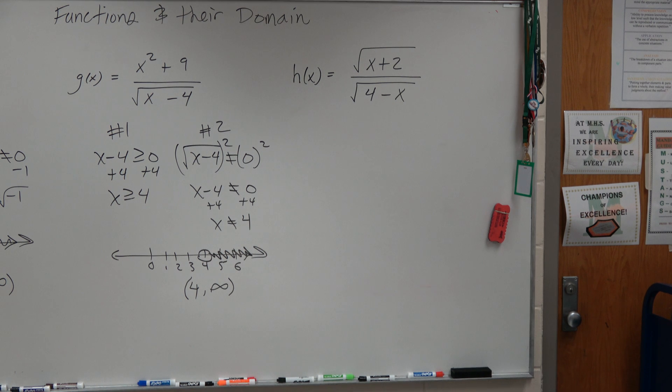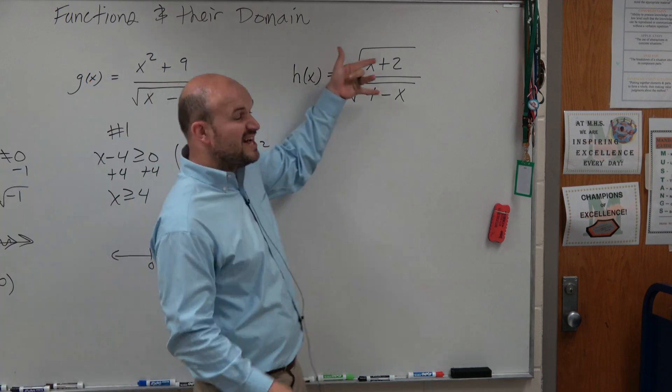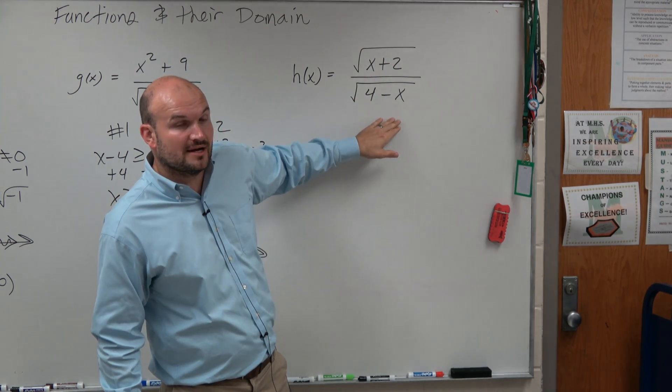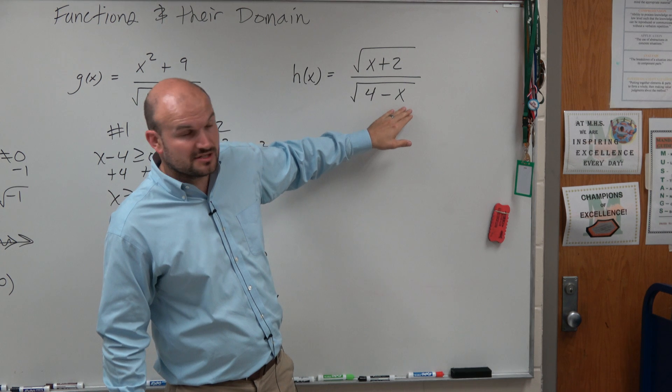This gets a little bit more confusing. So here, now we have two radical restrictions, and then one where it's also in the denominator.